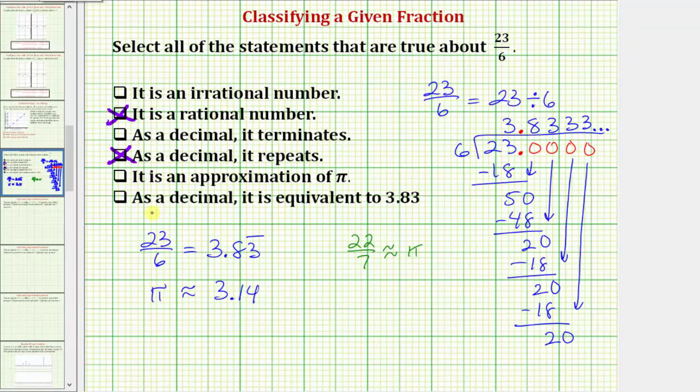The last statement, as a decimal it is equivalent to 3.83. Well 3.83 does not equal 3.83 repeating. While they would be approximately the same value, because they're not equal, as a decimal it is equivalent to 3.83 is not true.